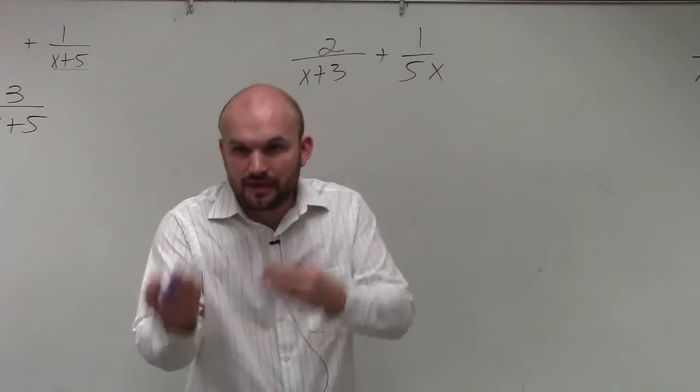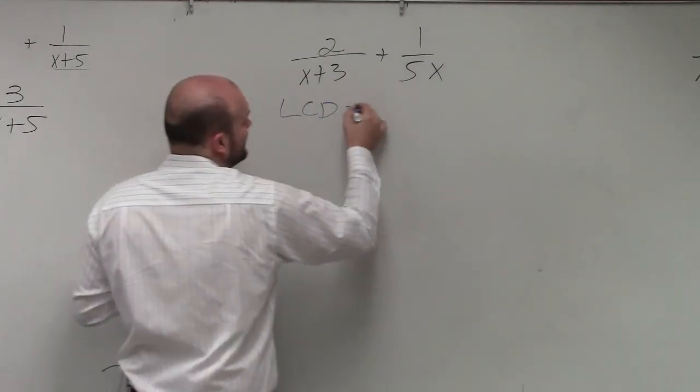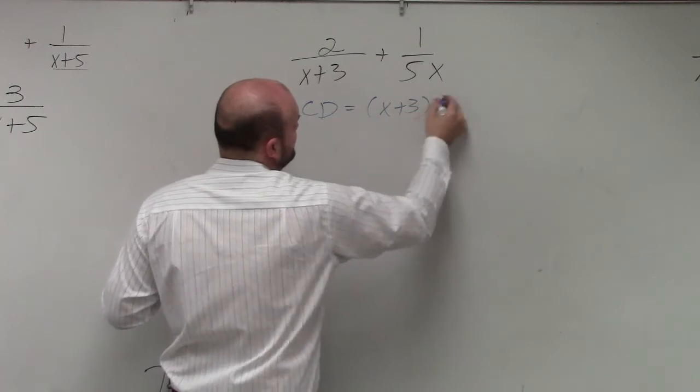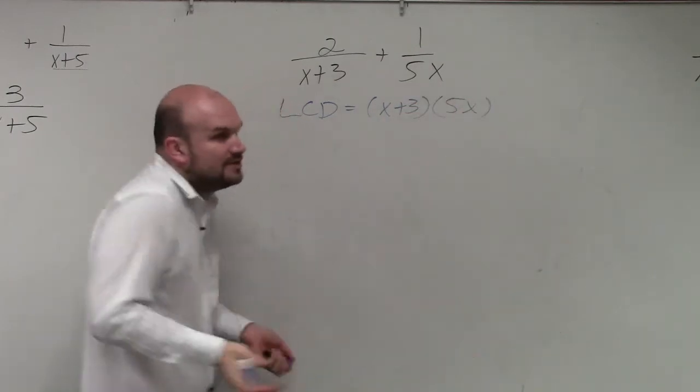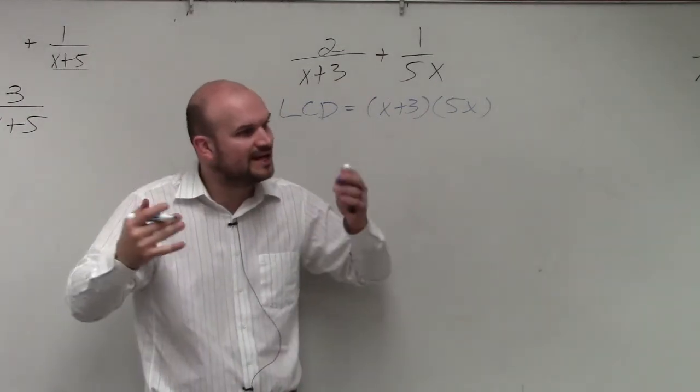I want you to look it up here. So to find our LCD, we can have this as x plus 3 times 5x. You just take the product of these two for your expressions. It makes it much easier than trying to figure out these numbers that they divide into.